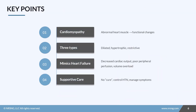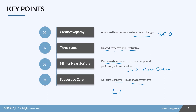To sum up: cardiomyopathy is an abnormality of the heart muscle which leads to functional changes and decreased cardiac output. There are three types — dilated, which is a contractility issue; hypertrophic, which is a thick-wall preload and filling issue; and restrictive, which is a filling issue causing decreased stroke volume. Symptoms mimic heart failure: poor peripheral perfusion, volume overload with JVD and pulmonary edema. There is no cure — we do supportive care, control blood pressure, manage symptoms, and the patient may end up with an LVAD as a bridge to transplant if necessary.